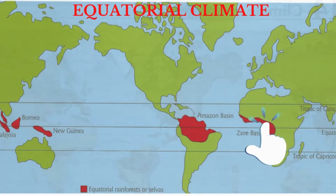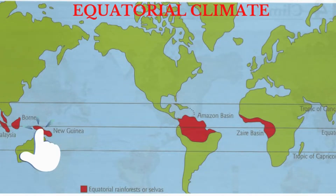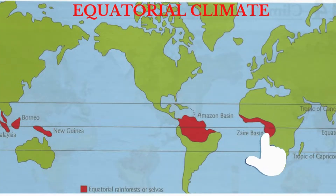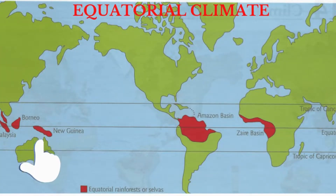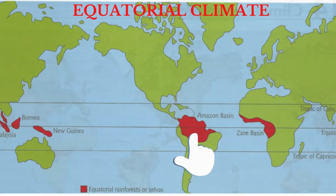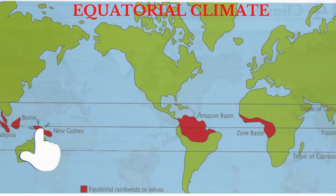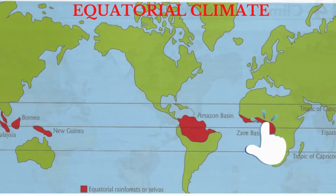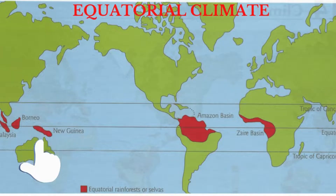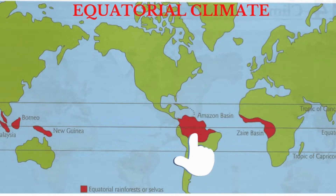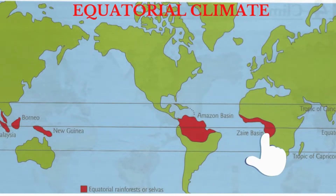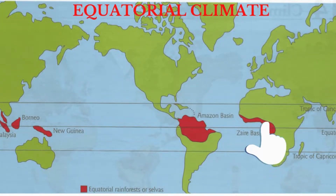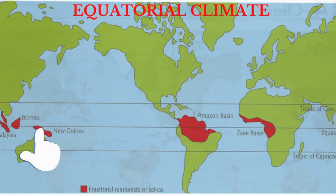Equatorial climate is located on lowland areas about 5 to 10 degrees north and south of the equator. It is because it is so close to the equator that it has the name equatorial. This climate is therefore influenced by the ITCZ, which forms near or at the equator.